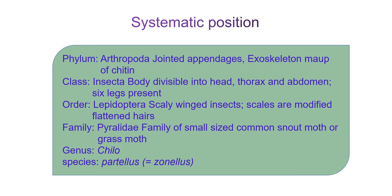Now we can see its systematic position. Chilo Zonellus or Partellus belongs to Phylum Arthropoda, which shows jointed appendages and a chitin exoskeleton. Class Insecta — body divisible into head, thorax, and abdomen, bearing six legs. Order Lepidoptera — scaly-winged insects where the scales are modified flattened hairs. Family Pyralidae — small-sized common snout moths or grass moths. Genus Chilo, species Partellus or Zonellus.